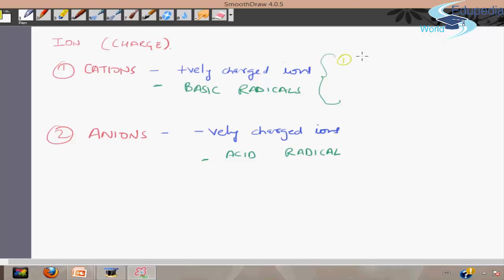All these cations and anions are classified into four categories based on the number of charge on the particular ion. We have monovalent, divalent, trivalent, and tetravalent. Similarly in anions also we have the same kinds of categories: monovalent, divalent, trivalent, and tetravalent.